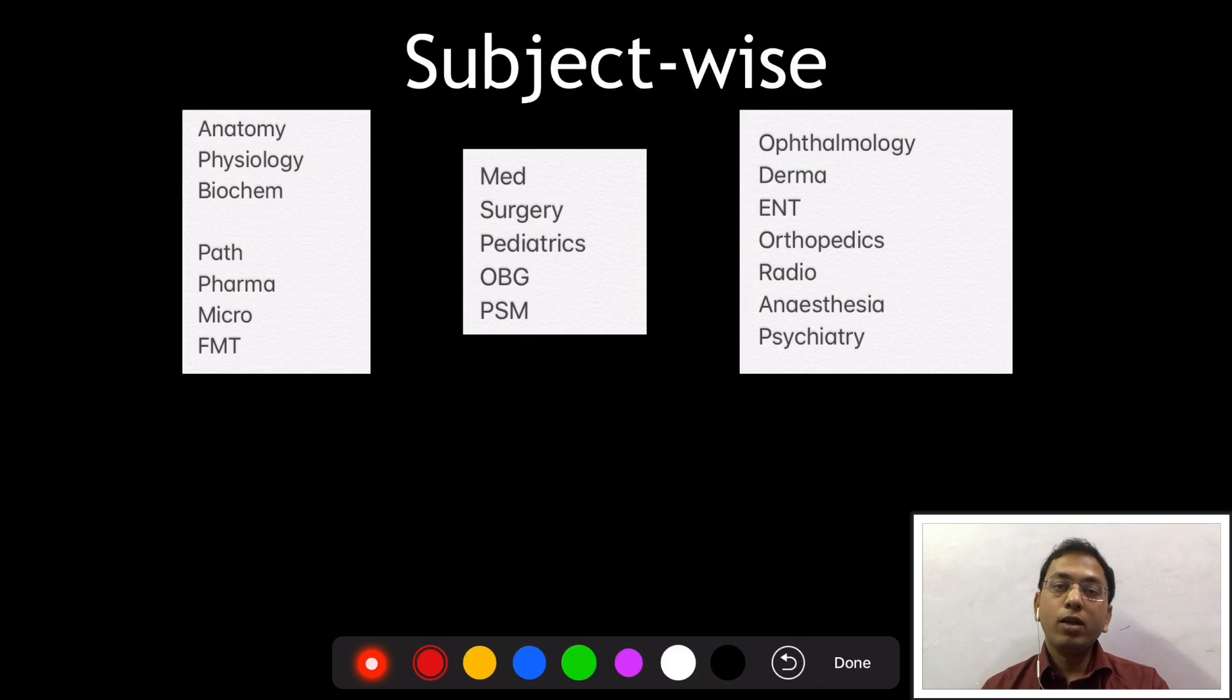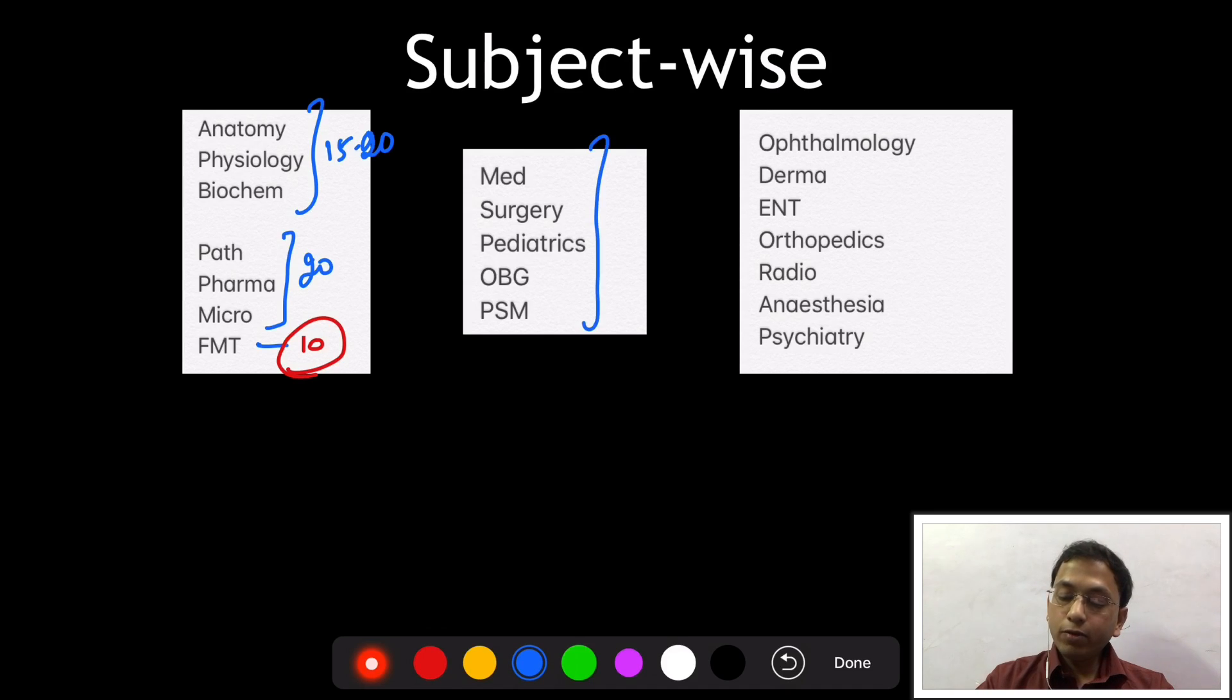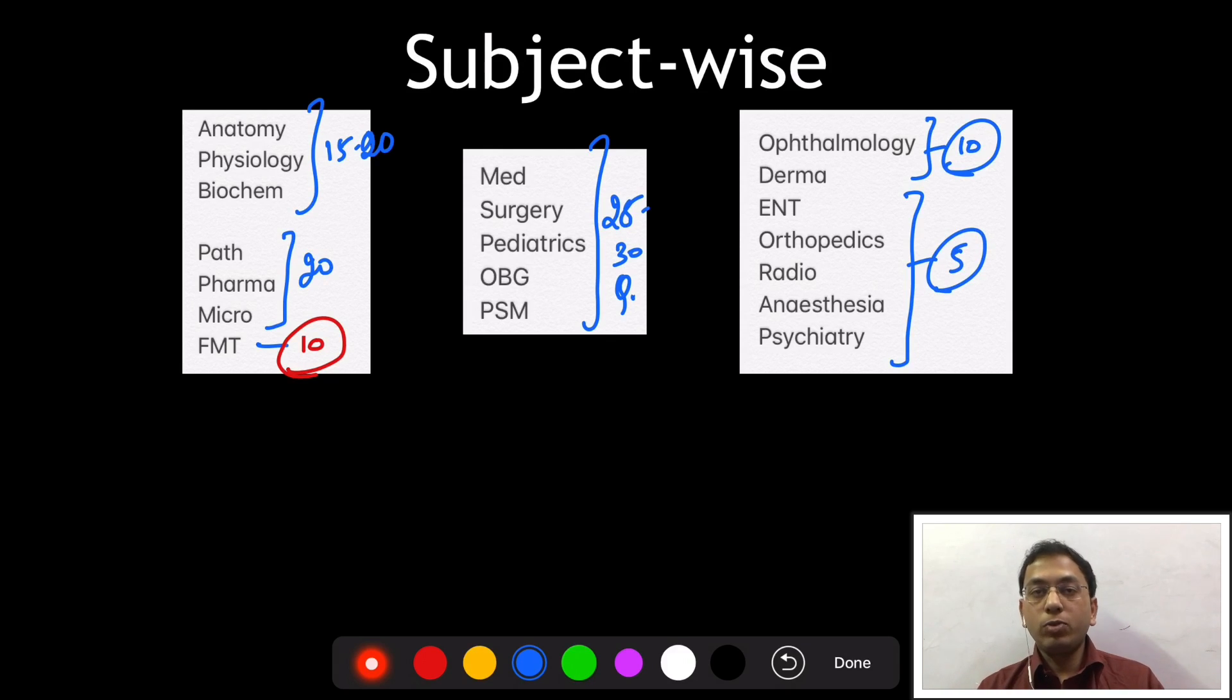Coming to the subject wise distribution of these 300 MCQs, a basic distribution. For the first year subjects, we expect around 15 to 20 questions each for the subjects. Second year, we have path, pharma, micro which we can expect around 20 questions each. For forensic, for a short subject, forensic does actually carry a higher weightage and this should be considered in your preparation. Do not underestimate this subject. Coming to the long subjects, we expect around 25 to 30 questions each. In the short subjects, actually ophtha and derma do carry a higher weightage just because of the images. Because there has been an increase in the images and these two subjects carry a lot of images. The rest of the short subjects, we can expect around 5 questions each. This is the basic overview of distribution of questions.